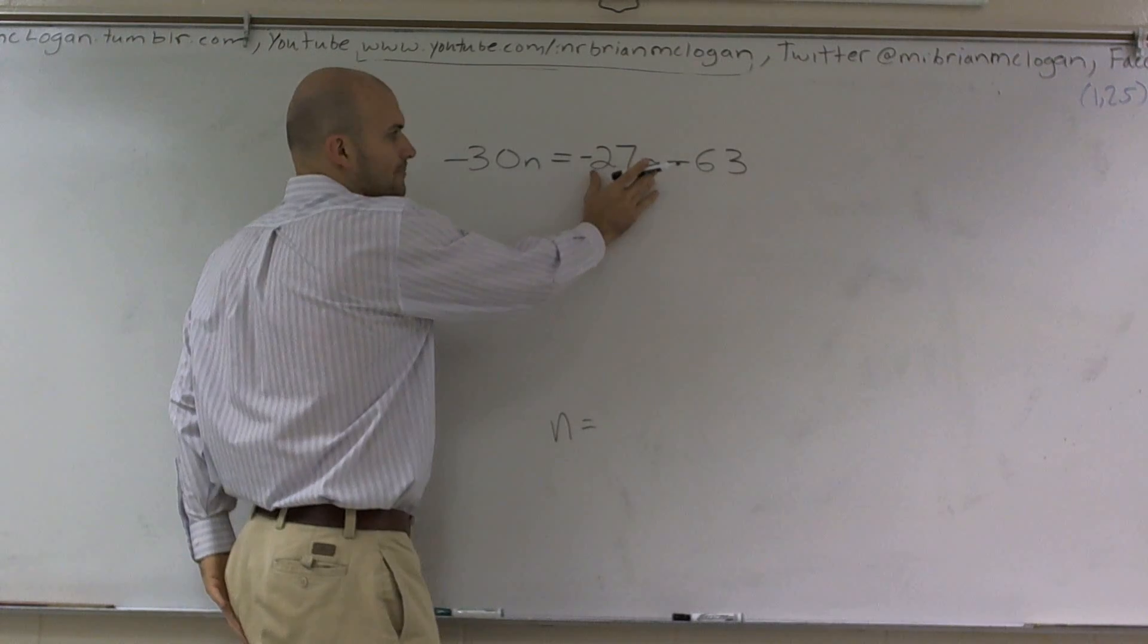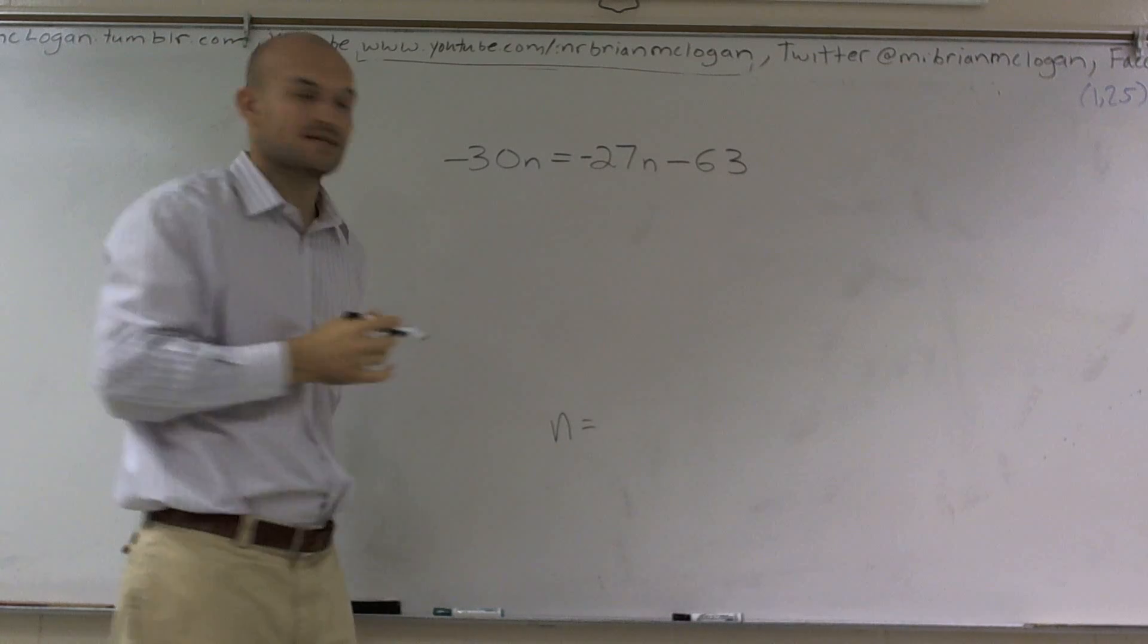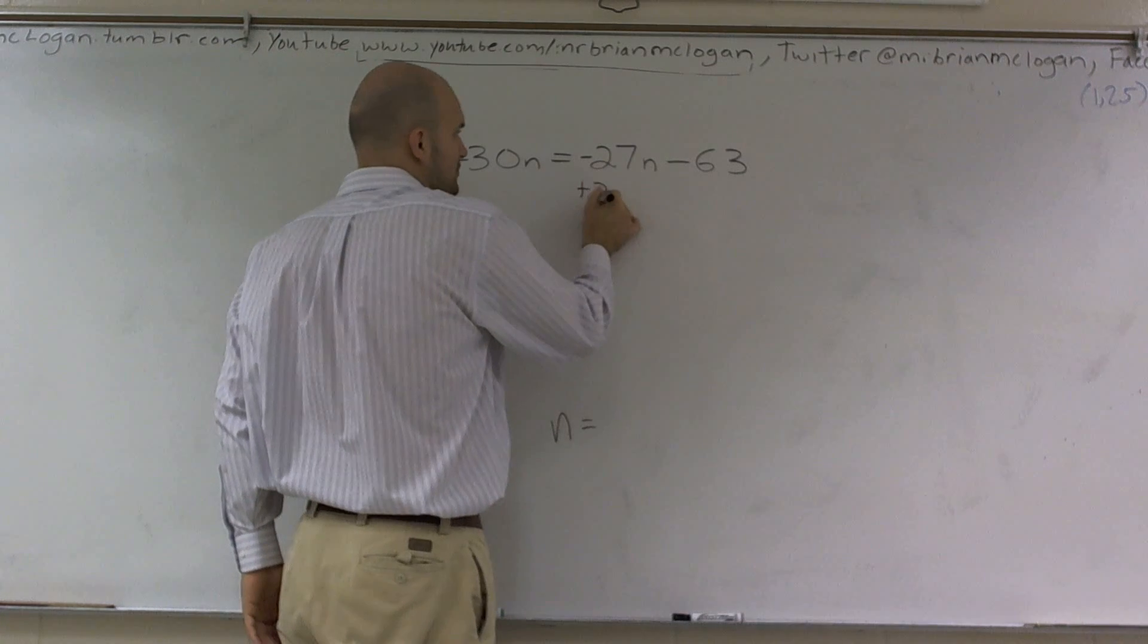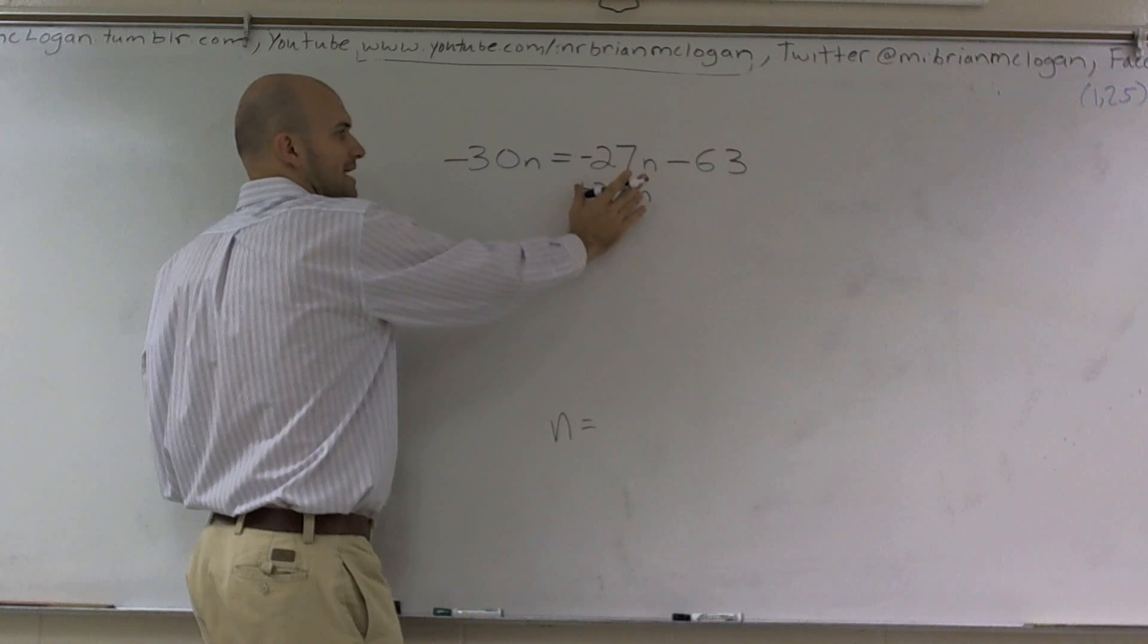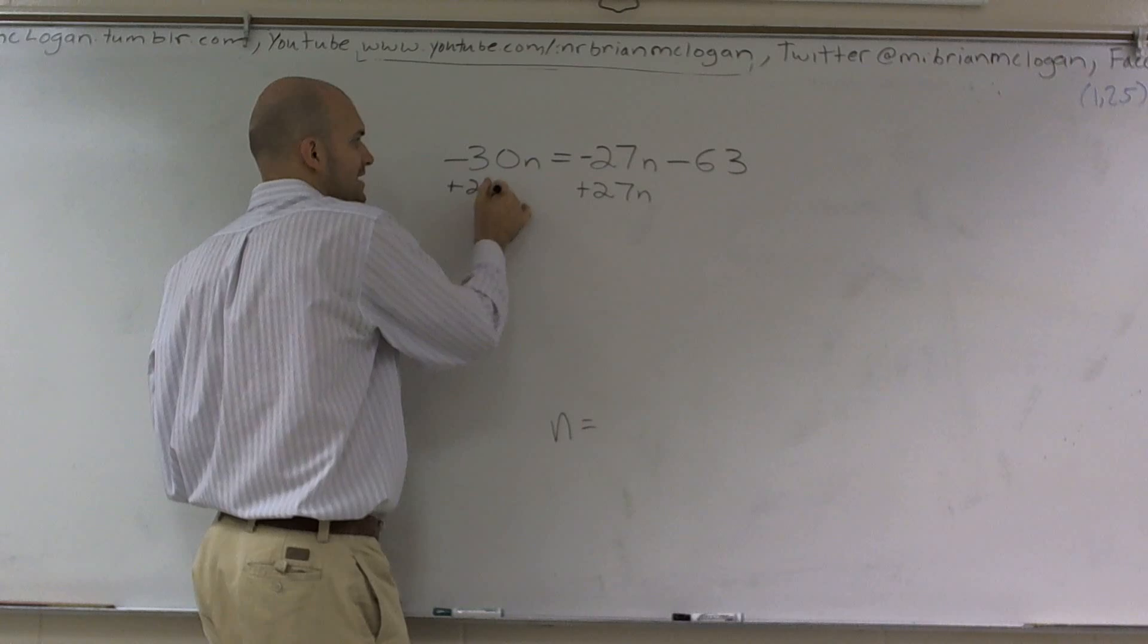I'm going to choose to get rid of my negative 27. To do that, I'm going to add 27. Remember, by the addition property of equality, whenever you add on one side of the equation, you have to add on the other side of the equation.